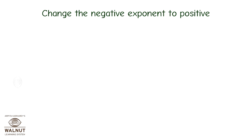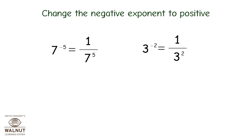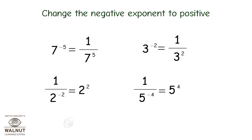Change the negative exponent to positive: 7 raised to minus 5 is equal to 1 upon 7 raised to 5. 3 raised to minus 2 is equal to 1 upon 3 squared. 1 upon 2 raised to minus 2 is equal to 2 squared. 1 upon 5 raised to minus 4 is equal to 5 raised to 4.